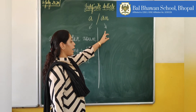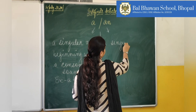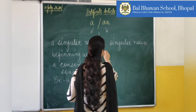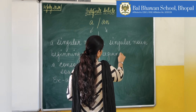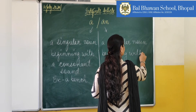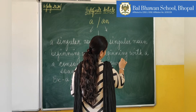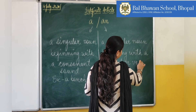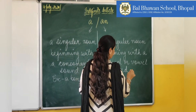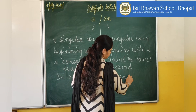The indefinite article 'an' is used before a singular noun beginning with a vowel or a vowel sound. For example, an ink pot.